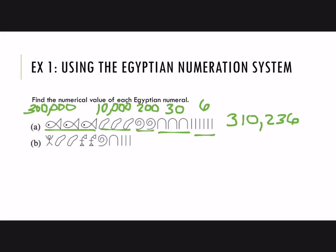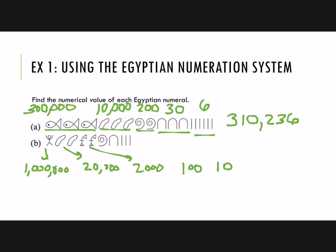In part B, go through and find the value for each symbol. The astonished person is one million. Then two pointing fingers, each ten thousand. We do have lotus flowers this time — they're a thousand each. One scroll is 100, one heel bone is 10, and three vertical staffs is 3. So this is 1,022,113.